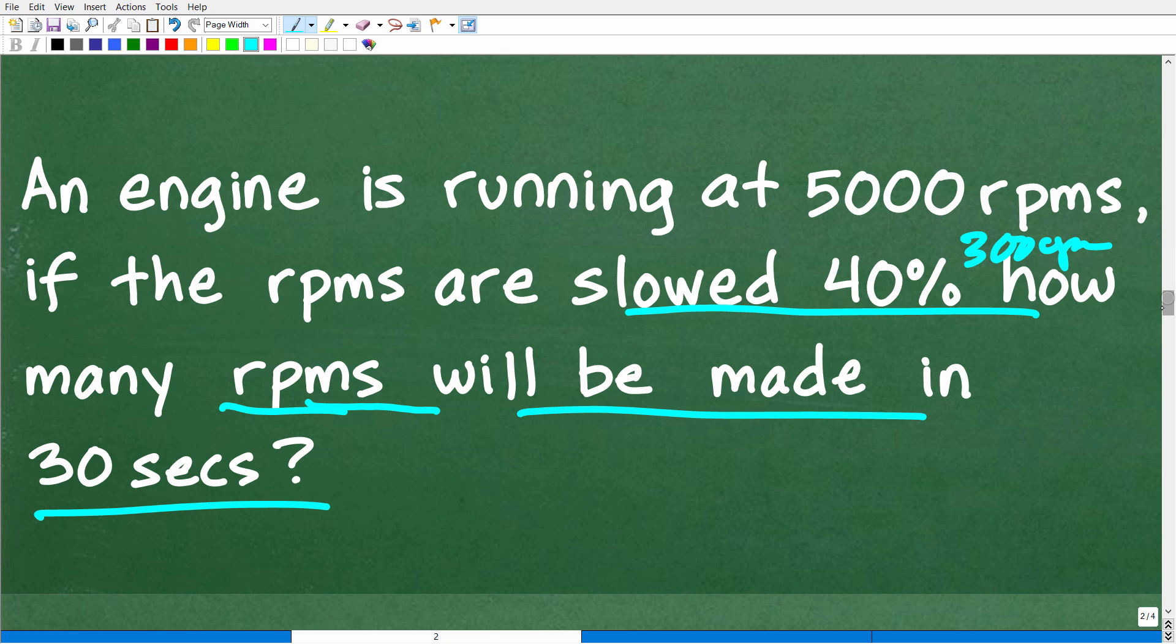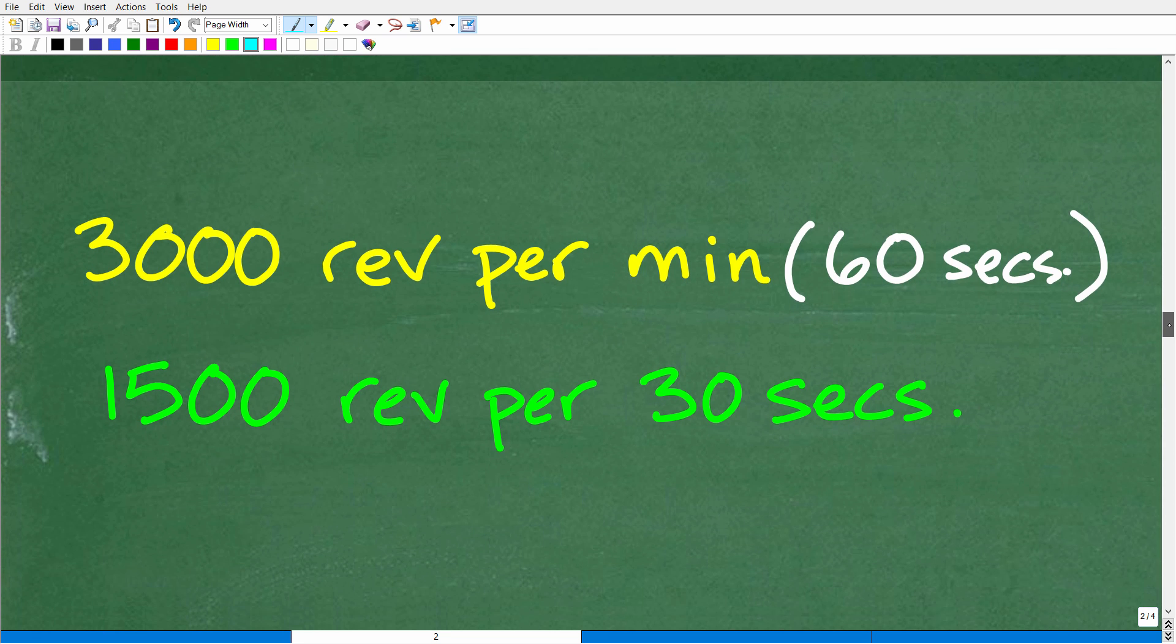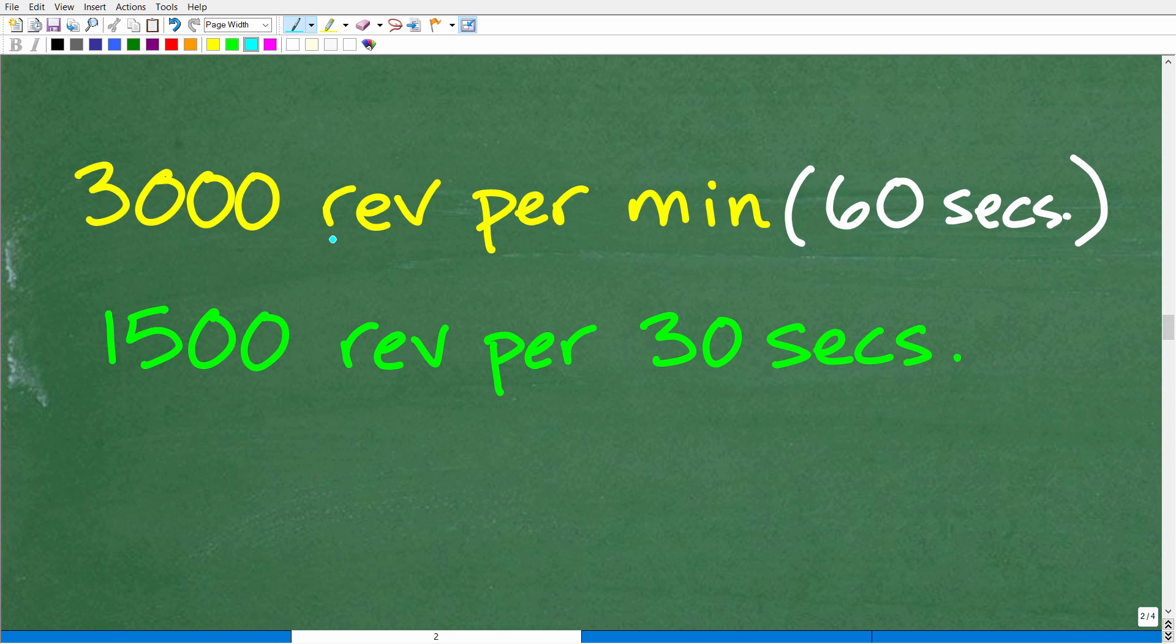All right. So, an engine that is running at 3,000 RPMs or revolutions per minute, okay, we could state that as revolutions per 60 seconds, right? So, it's turning 3,000 revolutions per every 60 seconds or per one minute. So, pretty straightforward math here. How many revolutions will it make in 30 seconds? Well, it's going to be half of this 3,000. So, 3,000 divided by 2 is 1,500 revolutions in 30 seconds, okay?